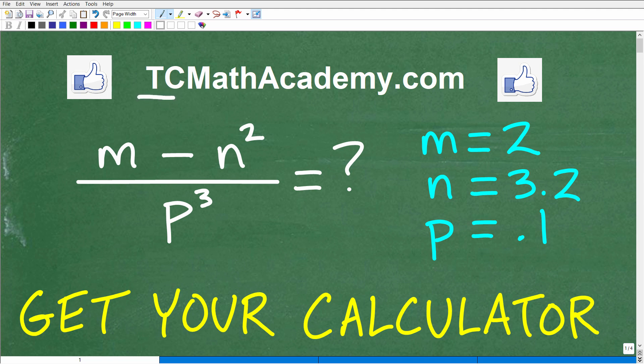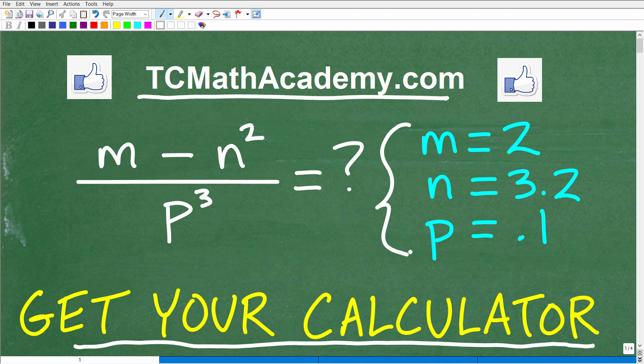Hello, this is John from TCMath Academy and in this particular problem I'd like you to go ahead and get your calculator. Now if some of you have been watching my previous videos or are a subscriber, you probably know I do a lot of videos that say no calculator allowed. I really want you to practice working without a calculator, but there are definitely times in mathematics, especially in more advanced math, that you need to use your calculator and here is a perfect situation. So what we want to do here is evaluate this variable expression m minus n squared over p cubed for these respective values for those variables.